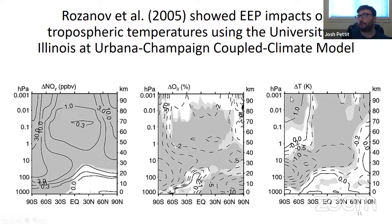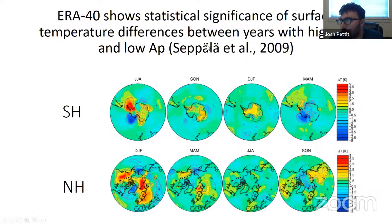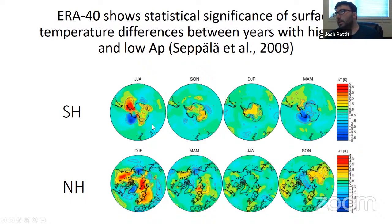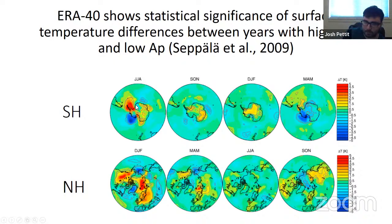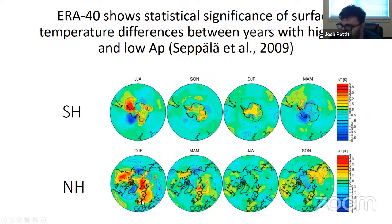This illustrates that we can see impacts all the way down to the surface. Another paper was done by Annika Seppälä in 2009, looking at ERA-40 reanalysis data, showing surface temperatures associated with years of high AP and low AP. You can see temperatures of plus or minus 5K at the surface with differences between years of high AP and low AP. And likewise, if you look at the northern hemisphere in December, January, February, you also see these types of temperature changes.